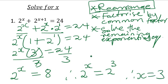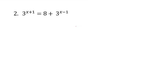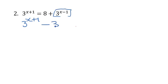That was problem number one. Let's check problem number two. The same method is going to happen: first you rearrange the equation, second you take out a common factor, and then lastly you solve the remaining equation. So let's rearrange: we have 3^(x+1) — we take it to the left-hand side by transposing — so that will be minus 3^(x-1), equal to 8.